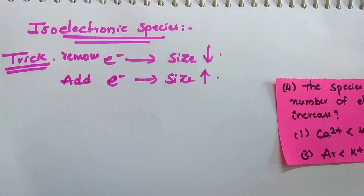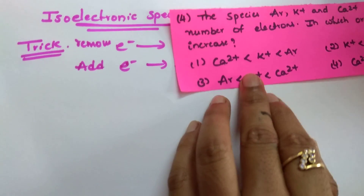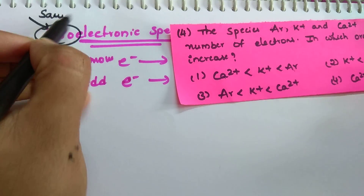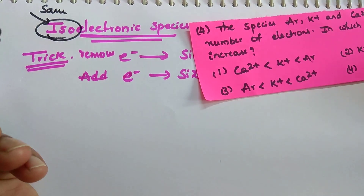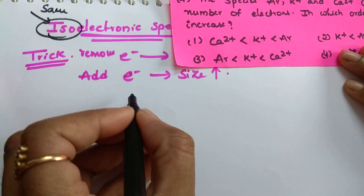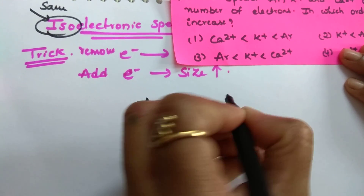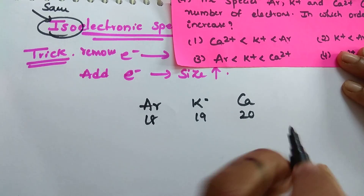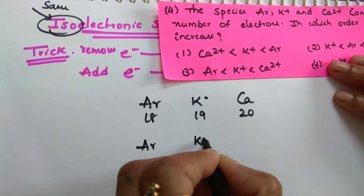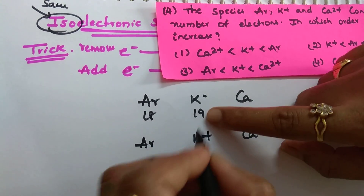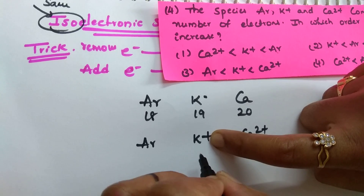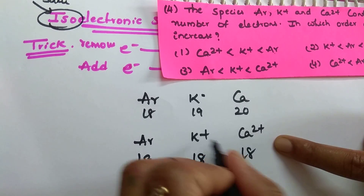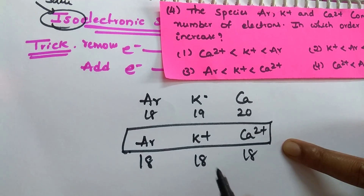Iso means same - species having the same number of electrons are called isoelectronic species. Argon has 18 electrons, potassium has 19 electrons, calcium has 20 electrons - atomic numbers 18, 19, 20. But potassium ion (K+) means 1 electron is removed, giving 18 electrons. Calcium ion (Ca2+) means 2 electrons are removed, also giving 18 electrons. So these three - Ar, K+, Ca2+ - are isoelectronic species.